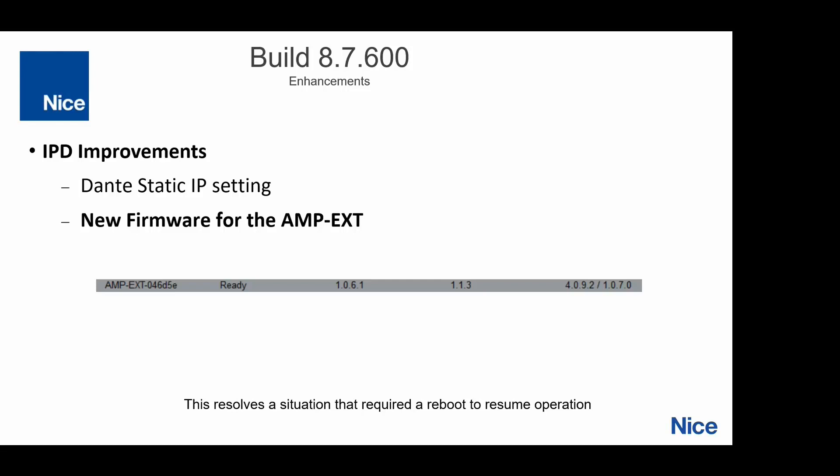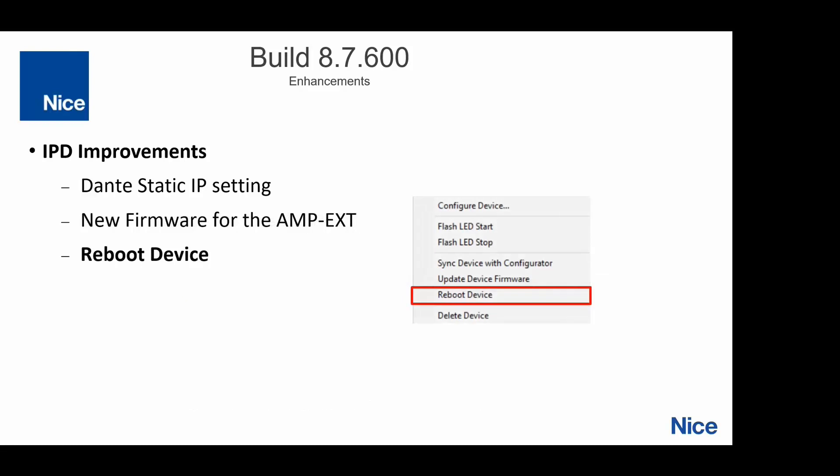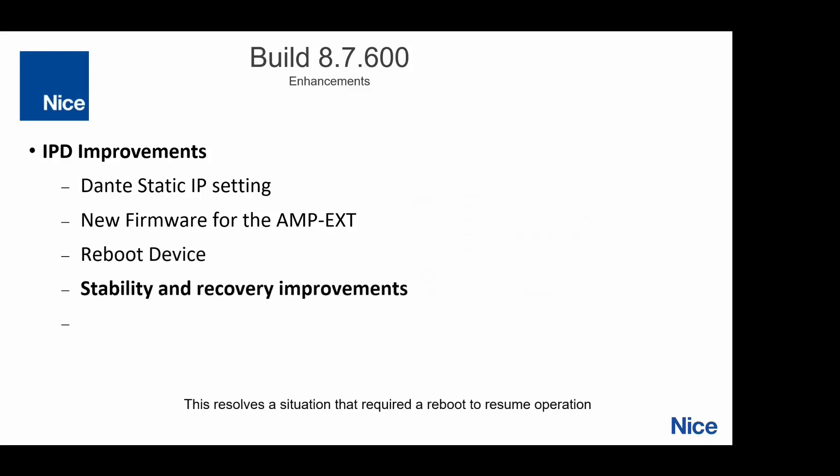There's new firmware available for the AMP EXT — version 1.0.6.1. If you're using an AMP EXT on a project, update to this core module when it releases on the 18th and update the firmware for the chassis. This resolves an issue where a reboot of the AMP EXT chassis was required. We also added a reboot device to the dropdown menu and made a bunch of stability and recovery improvements. If you're running IPDs in any fashion, you should update to 8.7600 — there are a lot of changes that will increase stability and overall improvements.